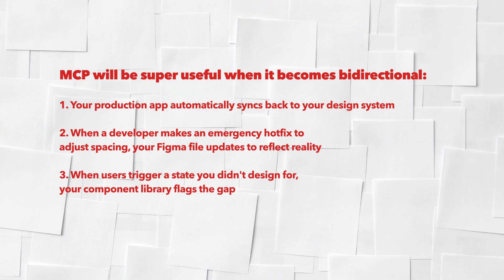Right now, MCP works in one direction — design artifacts go into code. But the real transformation will happen when it becomes bidirectional: when your production app automatically syncs back to your design system, when a developer makes an emergency hotfix to adjust spacing and your Figma file updates to reflect reality, and when users trigger a state you didn't design for and your component library flags that gap. Your design system becomes a living reflection of what's actually shipped, not just what you intended to ship.